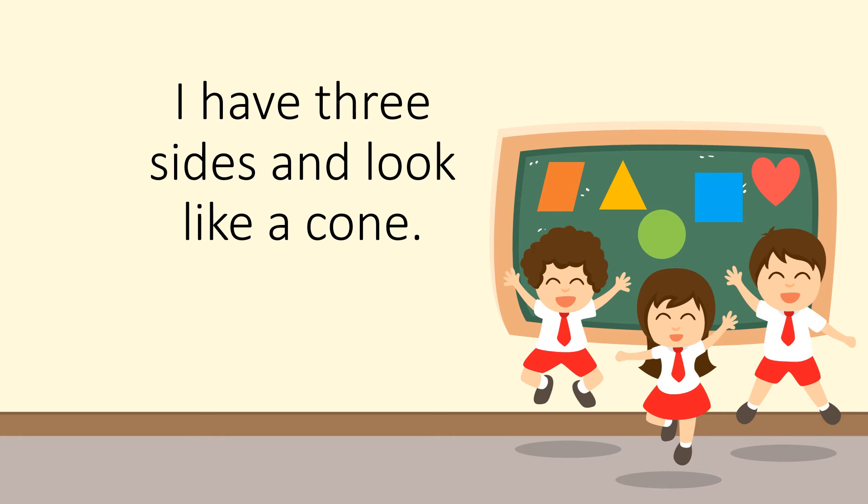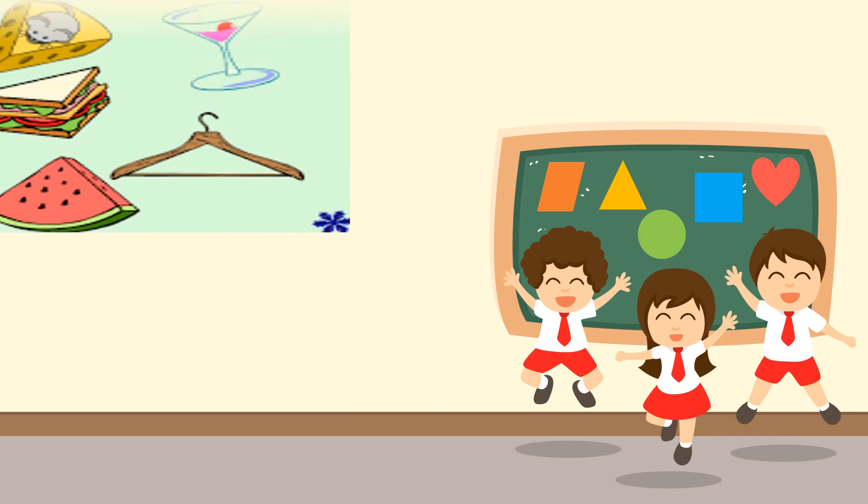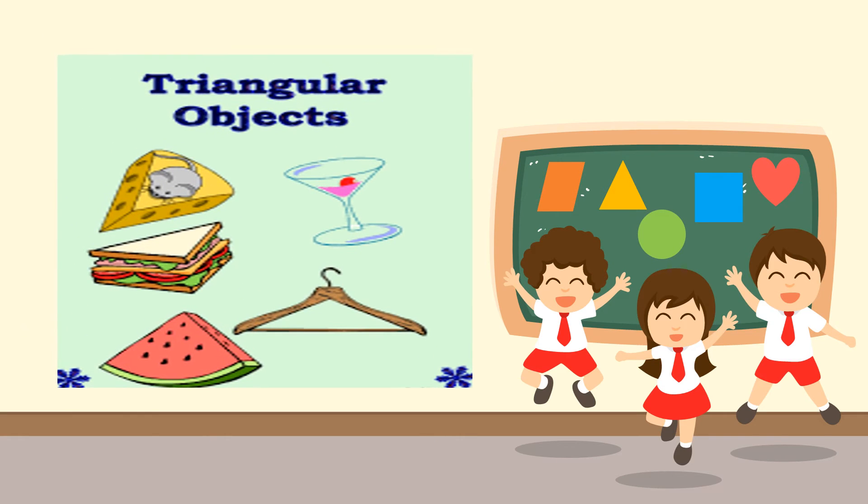Here we are talking about a shape which has three sides and looks like a cone. Can you guess? Very good students. I am triangle. Here you can see various triangular objects like a sandwich or like a watermelon piece. All these shapes look like the triangle. And this is the shape of triangle.